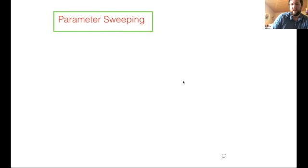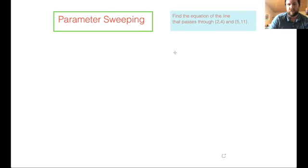Okay, so we're trying to find the equation of the line that passes through (2,4) and (5,11). Now, if we do this using parameter sweeping, would someone be willing to talk me through what that process looks like?